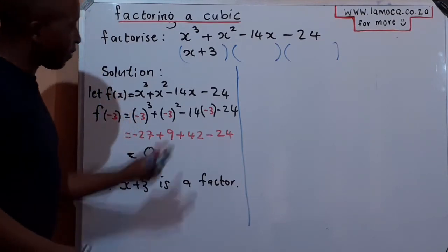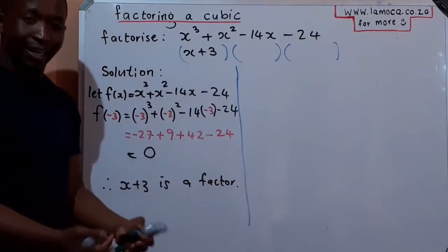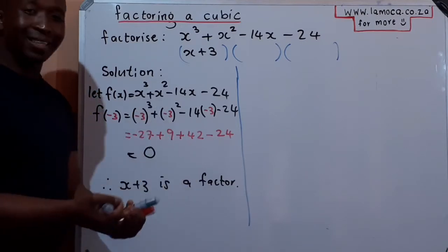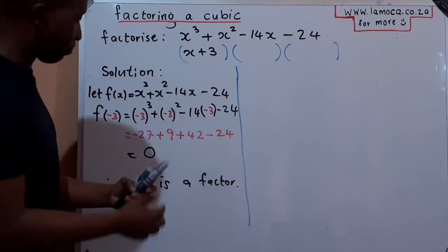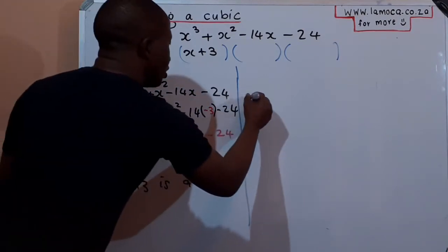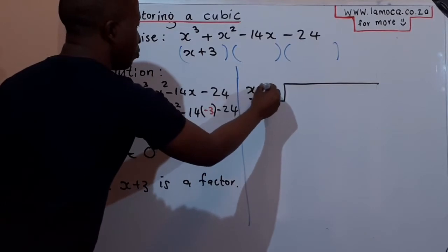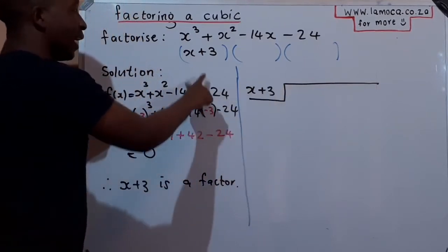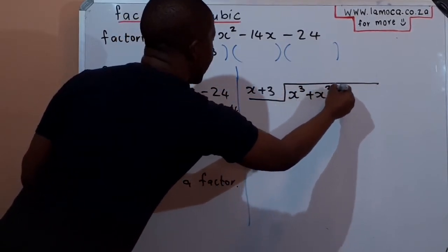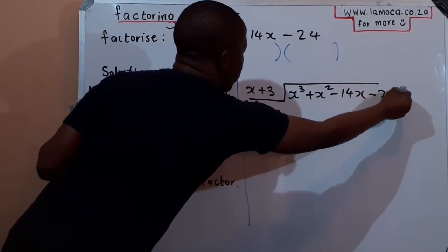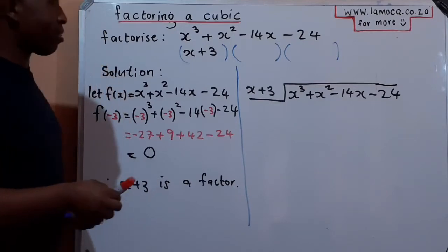Now I need to find the other two factors using long division. You set it up by placing the divisor (x + 3) on the outside, and the cubic expression x³ + x² − 14x − 24 inside the long division symbol.